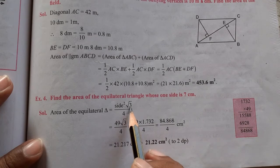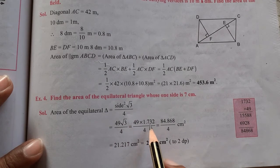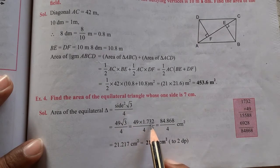You can also see here, the root 3 value is 1.732, so you can learn this value, that the root 3 value is 1.732.